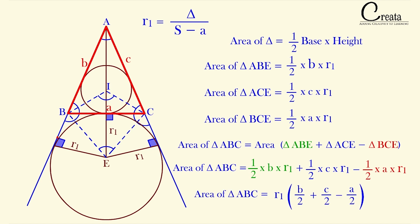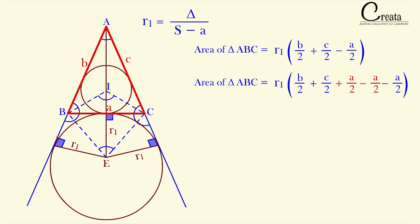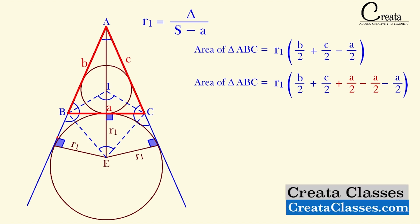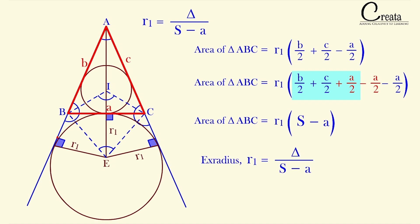On solving, we get area of triangle equals r1 into (b/2 + c/2 − a/2). We add and subtract a/2 — both cancel, so nothing changes — but this lets us segregate a/2 + b/2 + c/2, which is the semi-perimeter s. So on solving, we get area of triangle equals r1 into (s − a), and therefore r1, the x-radius, is equal to the area of the triangle upon semi-perimeter minus a. This is the proof of the formula.